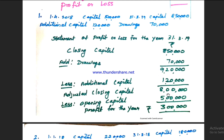To summarize the format: start with closing capital, add drawings, then deduct additional capital, and deduct opening capital. The final figure is either profit or loss. This is the standard approach for the Statement of Profit or Loss under incomplete records.